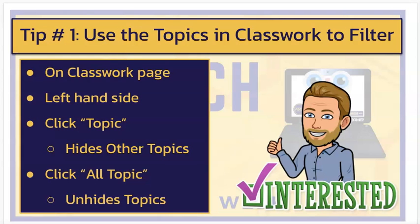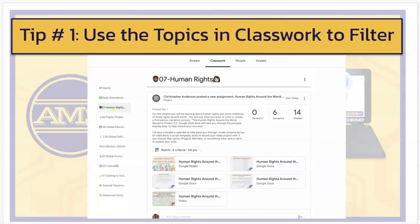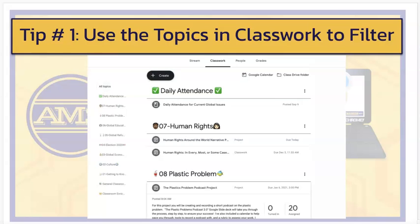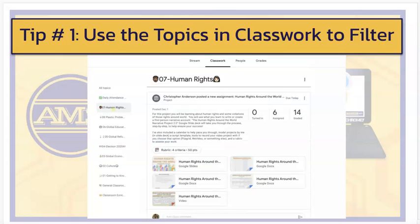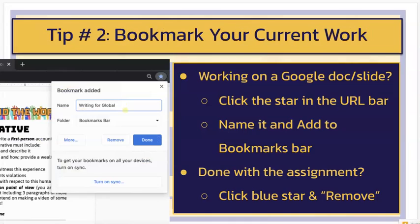If you click on the topic you want to see, it will filter out all the ones you don't, and then if you want to go back to the way it looked before, you would just click All Topics. So here's my classroom — if I click on Human Rights, it's going to only show the Human Rights assignments, but when I click back to All Topics, everything pops back up. It's a good way to filter out what you don't need and be able to focus on what you do.